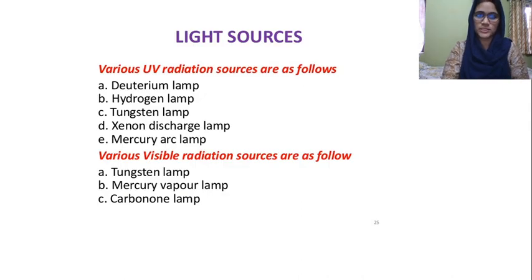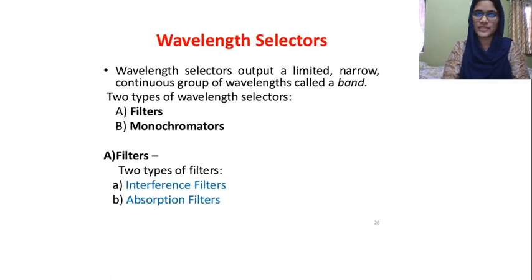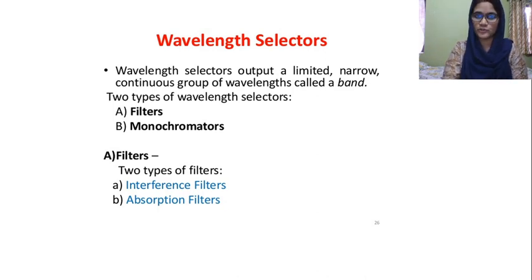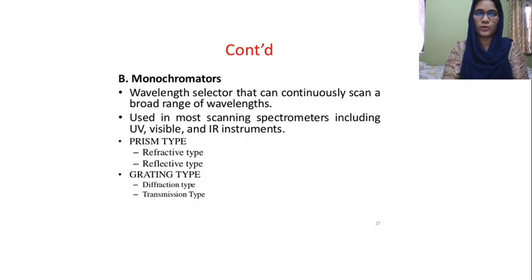The UV visible light sources are: deuterium lamp, hydrogen lamp, tungsten lamp, xenon lamp, and mercury arc lamp. These are the lamps and light sources. Then there are wavelength selectors — these are the monochromators and filters. Filters are of two types: interference filters and absorption filters. Monochromators are of prism type and grating type, which we discussed in the last class.